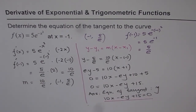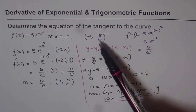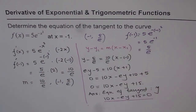Let's review this once again. First, find the coordinates of the point — the x and y value. Second, find the derivative at the given point; the derivative gives you the slope. Once you have the slope and the point, you can find the equation of the tangent line.